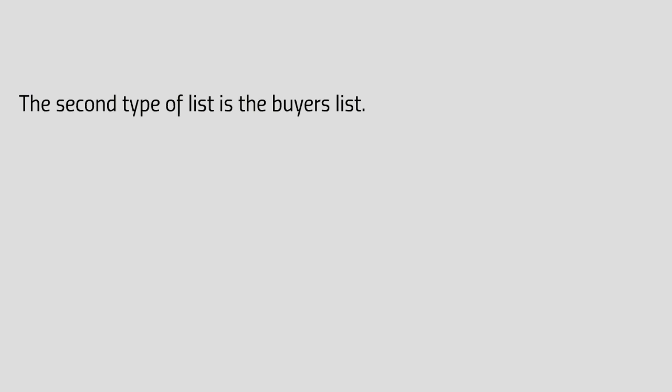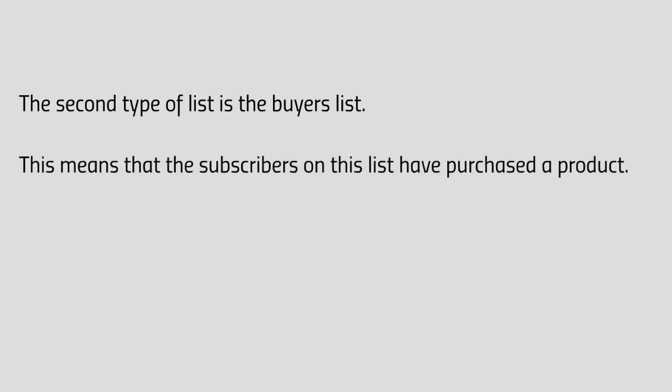Instead of having a list of, say, 100 buyers, you have to have a list of a thousand or a couple thousand. The second type of list is a buyer's list — this means the subscribers have actually purchased a product. Say someone lands on your sales page and buys a seven or seventeen dollar item — they're added to your list. That is basically a buyer's list.